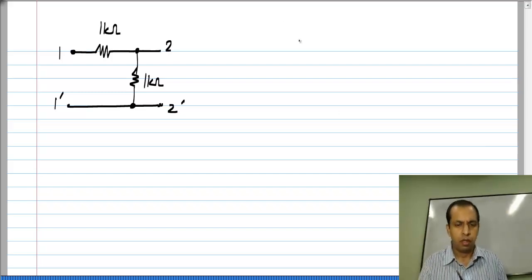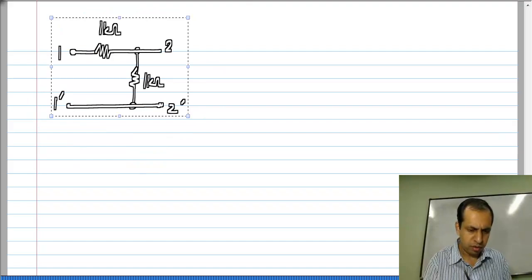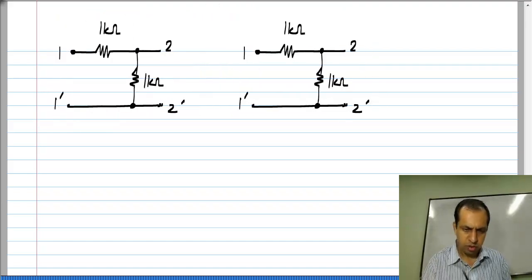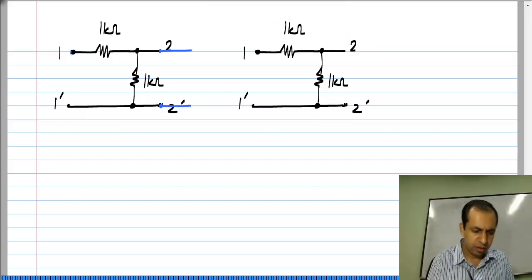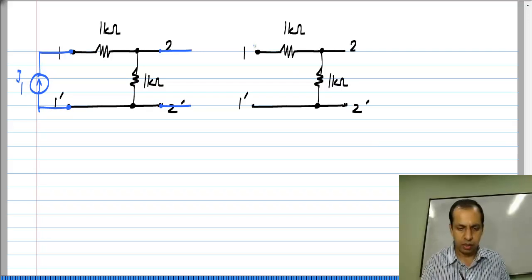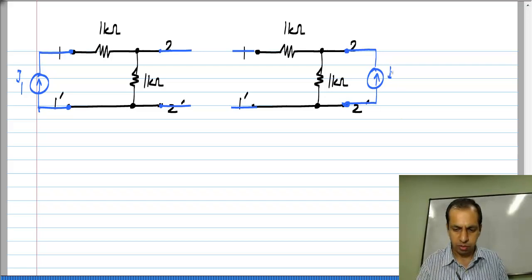This is the circuit I took and I have two cases for measurement: one in which port 2 is left open circuited and a current source is connected to port 1, and in the other case where port 1 is left open circuited and a current source is connected to port 2.